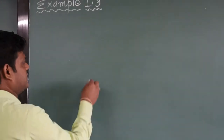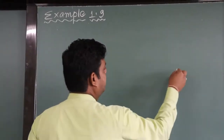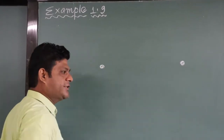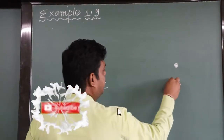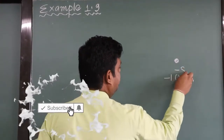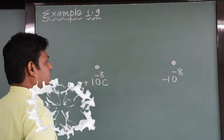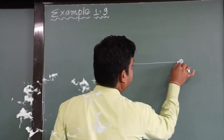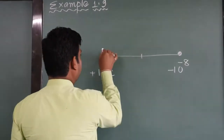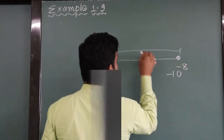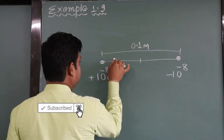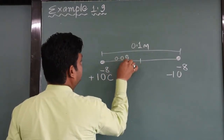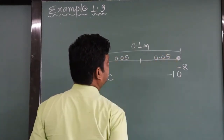See what is given in that example: two charged particles q1 and q2, the magnitudes are given as 10 to the power minus 8 coulomb each. They are separated by a distance of 0.1 meter. Suppose this is point A at 0.05 meter, and this is also 0.05 meter.